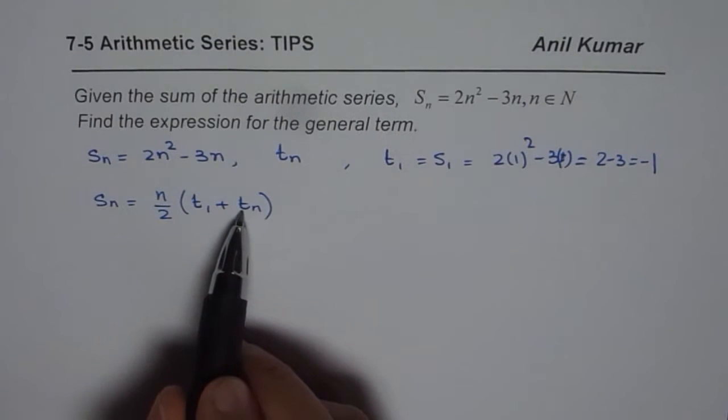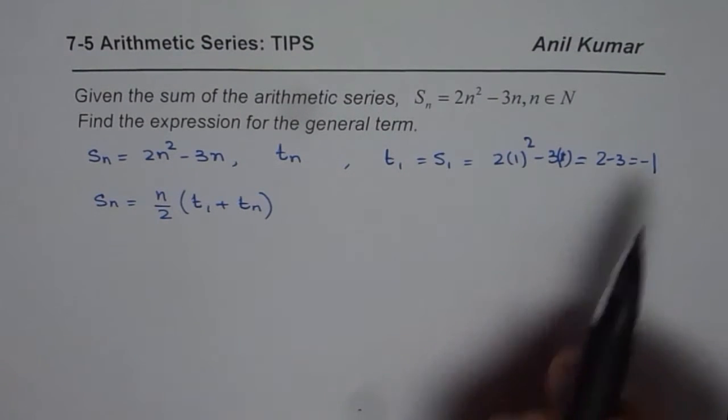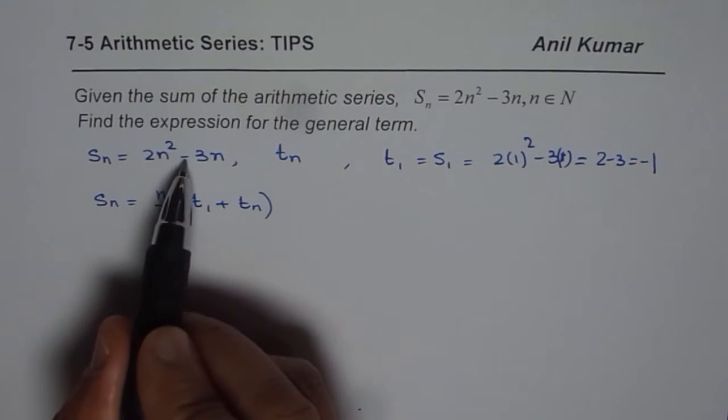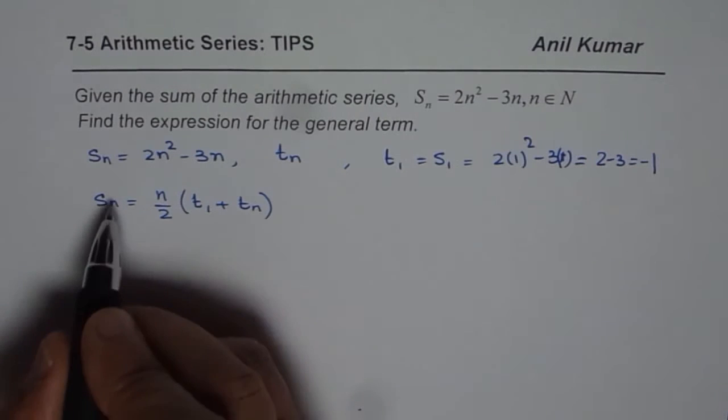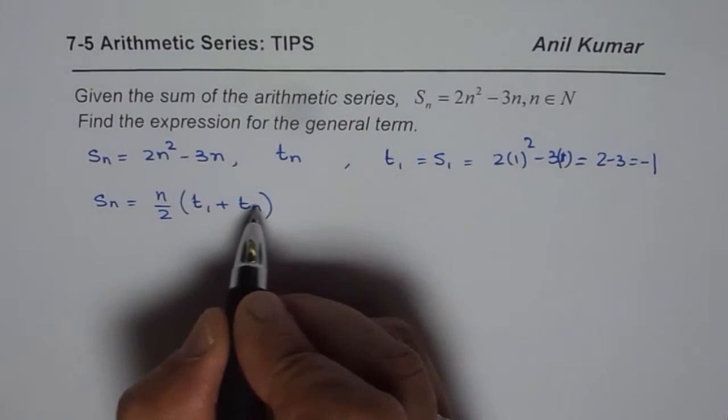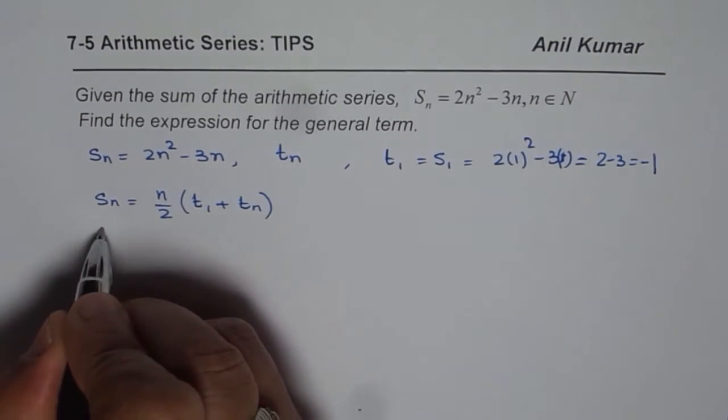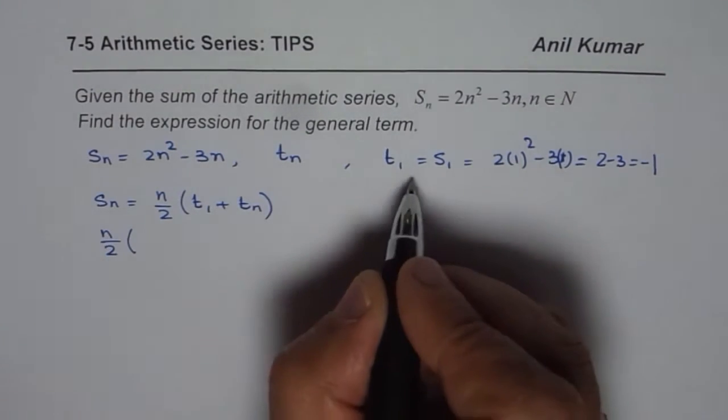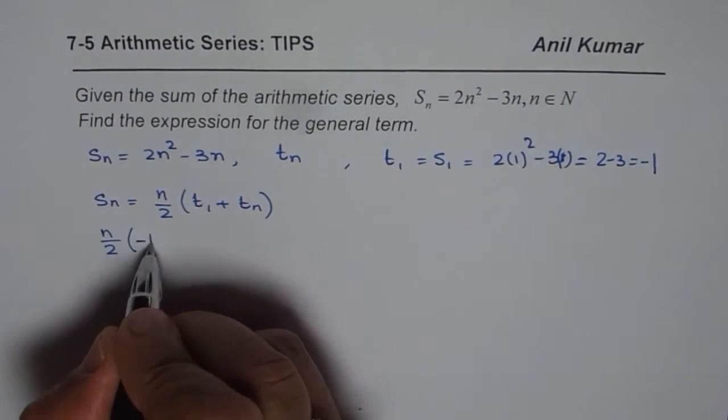Now we can easily find what t_n is, so that is the thinking part. S_n is 2n² minus 3n, so we can now write n over 2 equals, or we can write n over 2 which is S_n. t_1 we found as minus 1, so minus 1 plus t_n.